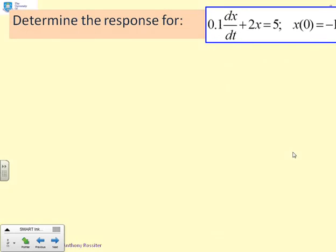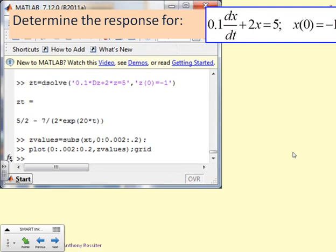Here's the second example. Determine the response from 0.1dx/dt plus 2x equals 5, x(0) equals minus 1. So there's the code. And again, you will see there's a direct link between that line there and the parameters that you were provided. The other lines down here, you'll see replicate what we had on the previous slide. So we've solved for z as a function of time.